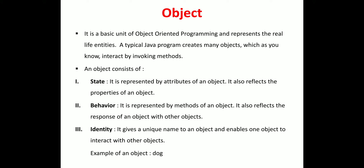The third component is identity. Identity gives a unique name to the object and enables one object to interact with other objects. For example, the pen object can interact with other objects. By calling a method, we can use the pen object in our code. How to create and use objects in methods will be discussed in further classes.